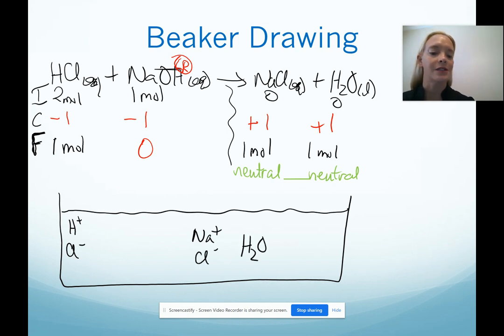But again, as we already discussed, those are neutral. So although I have them in solution they will not be affecting my pH. So at this point in a titration the key thing that affects my pH is how much excess HCl is left over in solution.